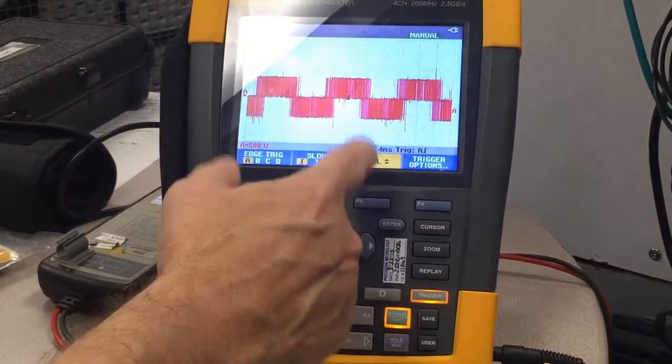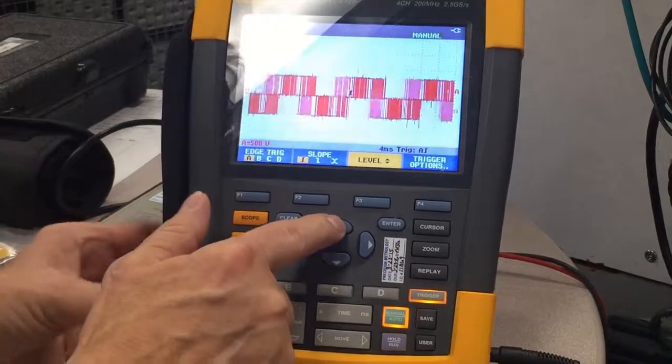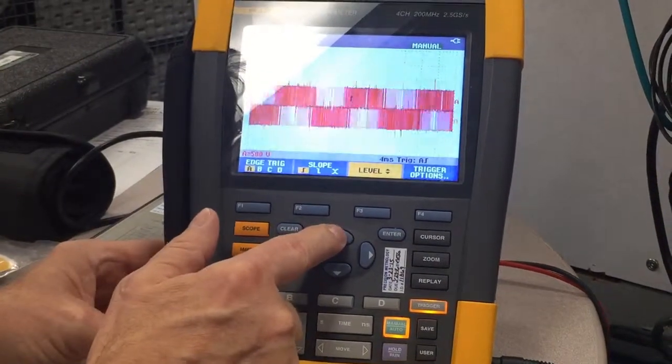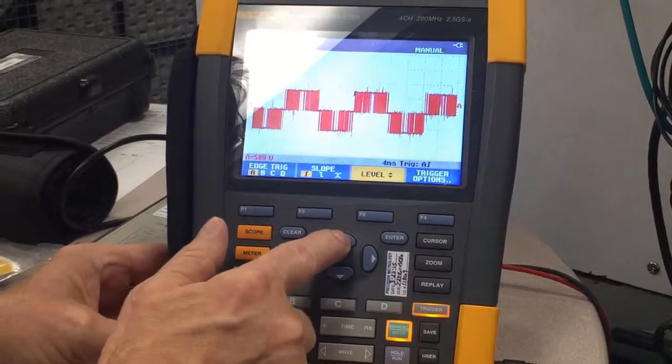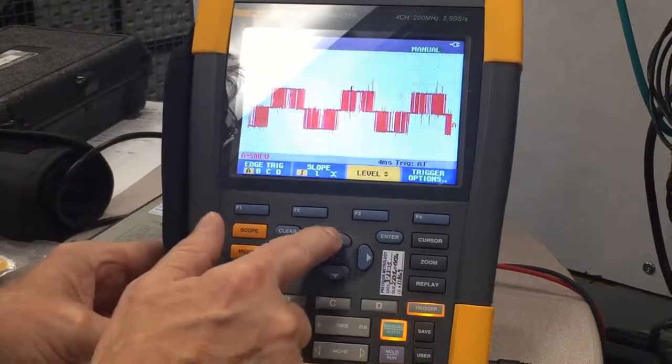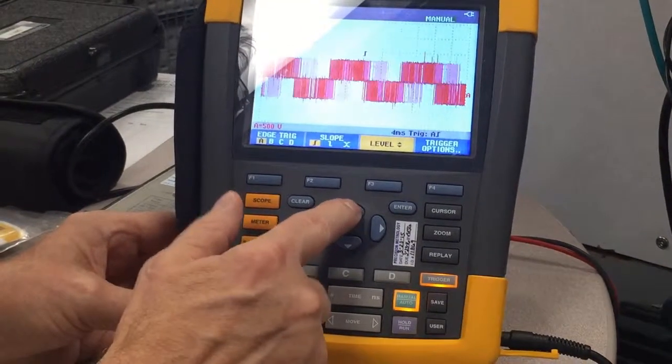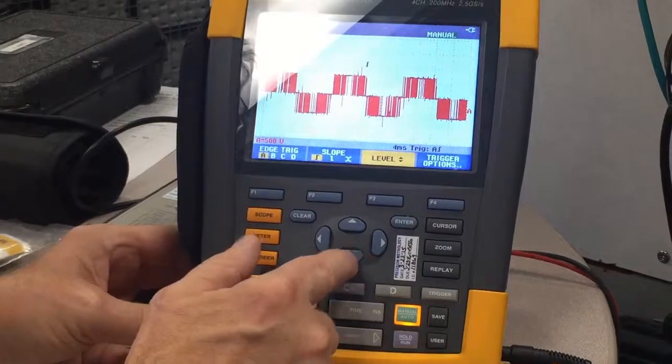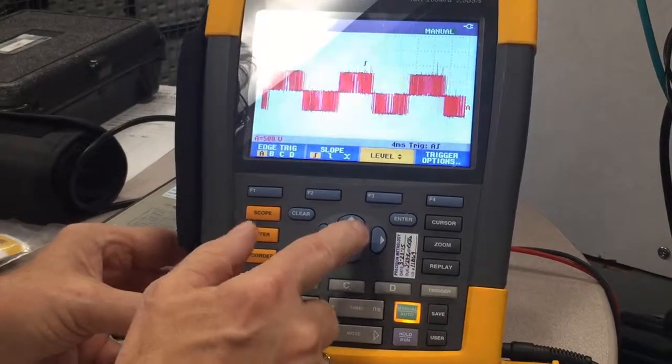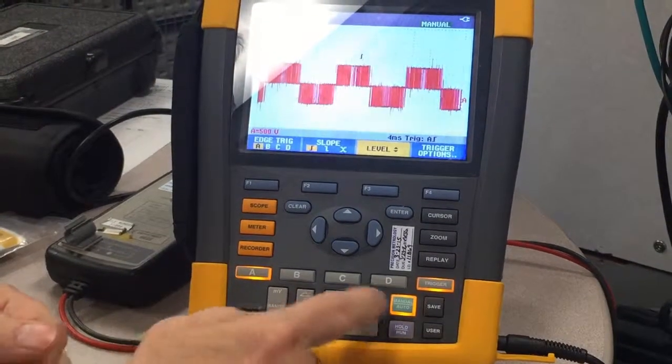The next thing we want to do is increase our trigger level using the up button, up arrow key, to a level until at which it stops triggering. We know it's triggering because we keep getting an update in the waveform. When we stop getting an update in the waveform, we bring it down until we just begin getting an update.